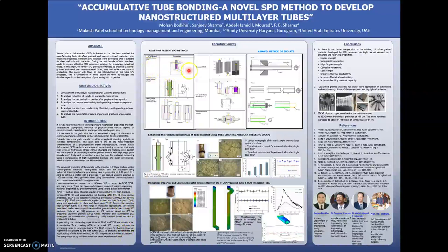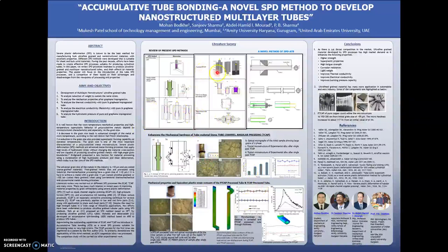These are the pictures of these methods. In the E-cap method, the tube is passed through the die using a punch at some angle, and the tube is produced. This is tube channel angular pressing, parallel tube channel angular pressing, and combined T-cap, as well as tube cycling pressing. This is the literature review behind this process.